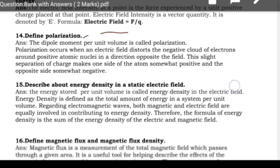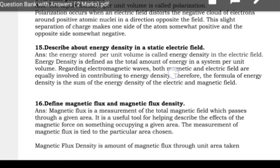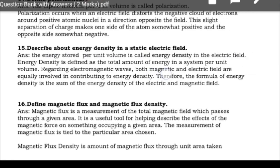Next: describe energy density in an electrostatic field. Energy density is defined as the energy stored per unit volume of an electric field. Regarding electromagnetic waves, both magnetic and electric fields are equally involved in contributing to energy density. Therefore, the formula for total energy density is the sum of energy density in the electric field and the magnetic field.